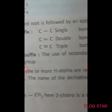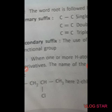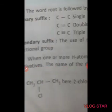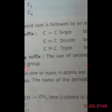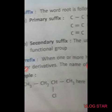The secondary suffix depends on the nature of functional groups. For the prefix: when one or more hydrogen atoms are replaced by a group, the compound is called a derivative, and the name of the derivative is written as a prefix. For example, in CH3-CH2-CH2-CHCl, '2-chloro' is the derivative and is written as the prefix '2-chloro', because H is replaced by chlorine at position 2.